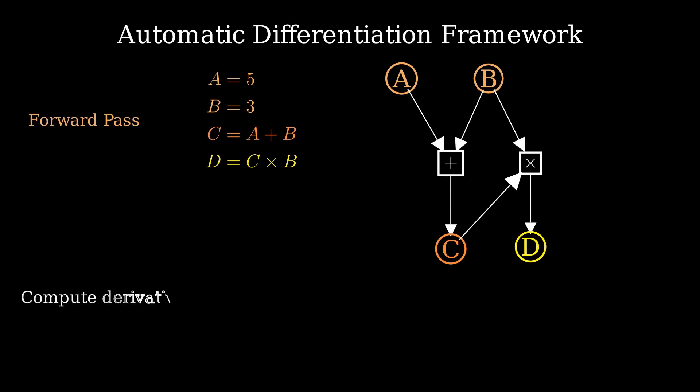What we need now are gradients of output with respect to input that is the gradient of D with respect to A and B. To do this we start at the output node D and compute the global derivative of D with respect to D which is always 1 and pass that on to the multiplication operation.